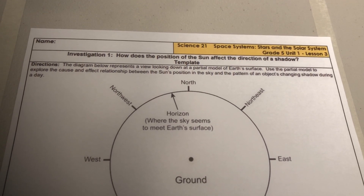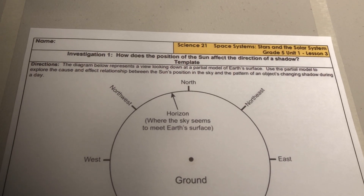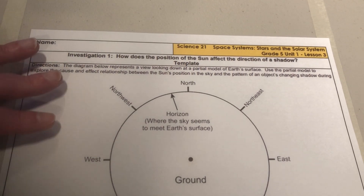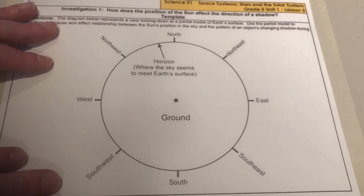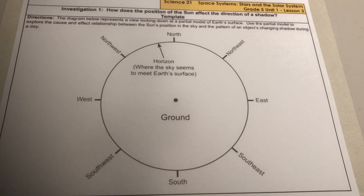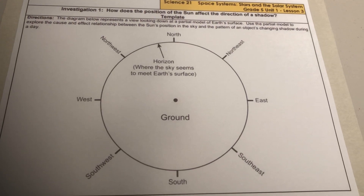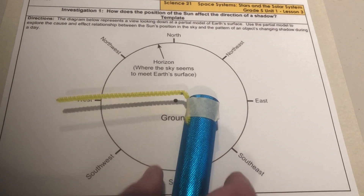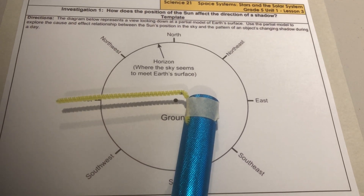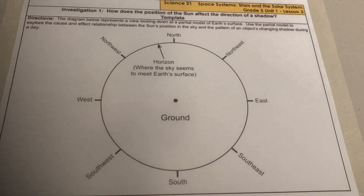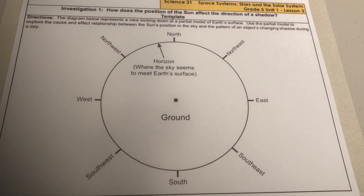We will use a model to simulate the pattern, and to represent Earth's surface in our model, we will use a diagram on the template for Investigation 1, which is shown. In the model, a flashlight will represent the sun. Here I have a flashlight on which I've taped a piece of pipe cleaner, which I'll explain the reason for a little bit later. Your teacher will give you a copy of the template on which you will record data.